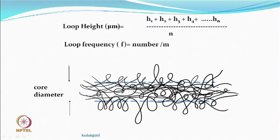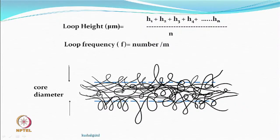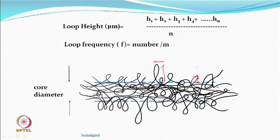Looking at a textured yarn edge, there is a denser area called the core and protruding loops are the surface characteristics. Loop height can be measured by examining a particular length, counting the number of loops, measuring their heights, and taking an average expressed in micrometers. The frequency is how many loops appear per unit length. When you use any optimization process, these parameters — core diameter, loop height, and loop frequency — will change.